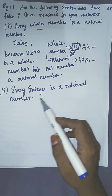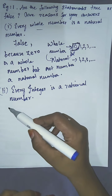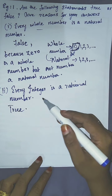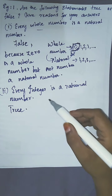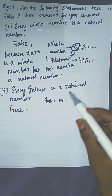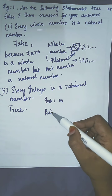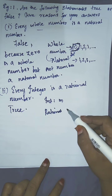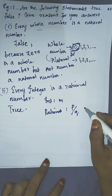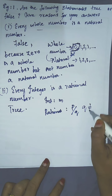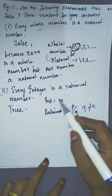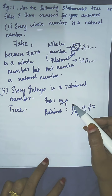Here is the second statement: every integer is a rational number. The answer is true. The reason is an integer can be expressed simply as m, and a rational number is expressed in the form p divided by q, where q should not be equal to 0. So we can write any integer as m divided by 1.